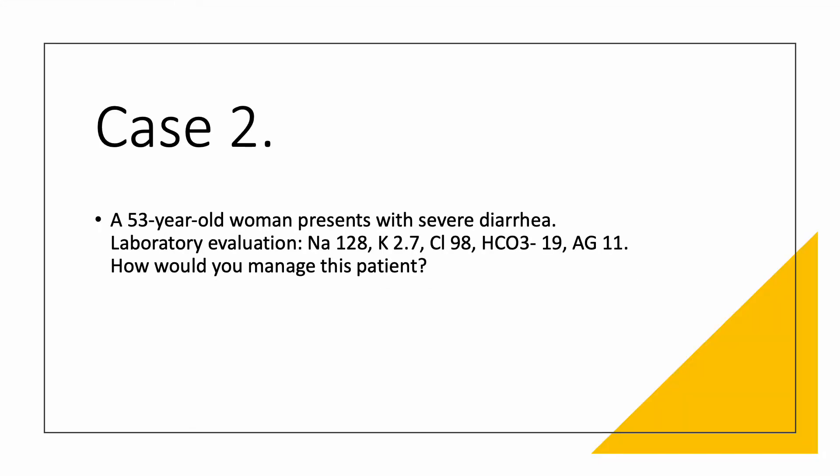We'll go now to case number two. We have a 53-year-old woman presenting with severe diarrhea. Laboratory evaluation: sodium 128, potassium is low — sodium and potassium are both low, as you would expect with diarrhea. Chloride 98, bicarbonate 19, anion gap calculated at 11. How would you manage this patient?